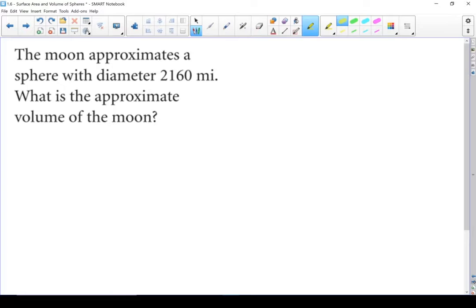Next question. The moon approximates a sphere with a diameter of 2,160 miles. What is the approximate volume of the moon? We're looking for the volume and we know the diameter is 2,160 miles. Let's write down our formula.